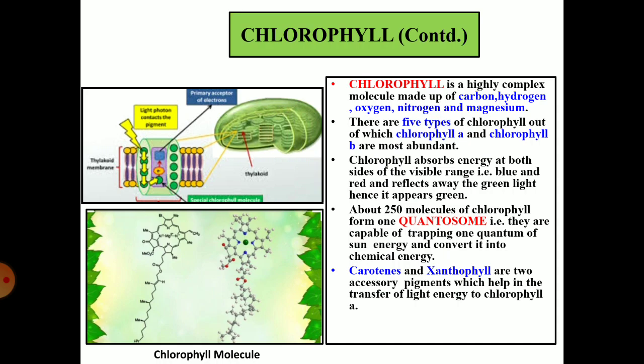What is chlorophyll? Chlorophyll is a highly complex molecule made up of carbon, hydrogen, oxygen, nitrogen, and magnesium. Magnesium is a very important component of chlorophyll; if it is not present, chlorophyll will not be manufactured. There are five types of chlorophyll present in the leaves, but chlorophyll A and chlorophyll B are most abundant. Chlorophyll absorbs energy on both sides of the visible range — blue and red — and reflects away the green light. That is the reason why chlorophyll appears green in colour.